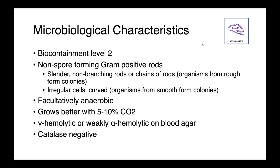Erysipelothrix are facultatively anaerobic, so they're able to grow under anaerobic conditions, and their growth is enhanced in a capnophilic environment with 5–10% CO2. On blood agar, they're gamma hemolytic, so typically not hemolytic, or weakly alpha hemolytic, and these bacteria are all catalase negative.